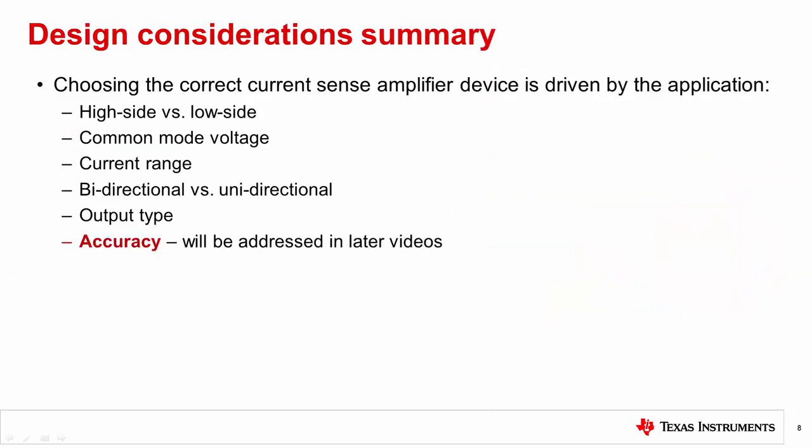There are many application requirements that will help determine the best current sense amplifier to use for any given system. This session has introduced five of these requirements. What may be the most important requirement — accuracy — will be the focus of later videos in this series.